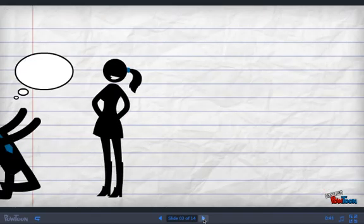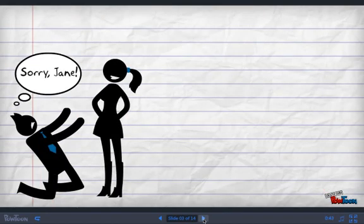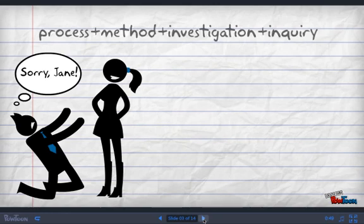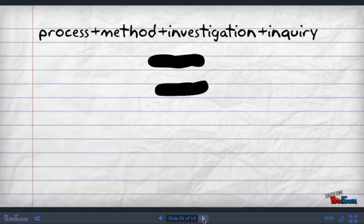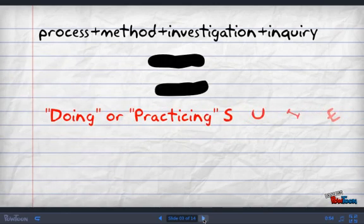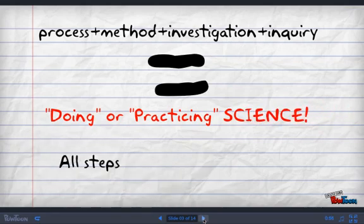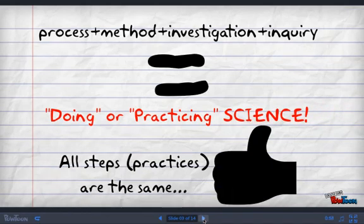Pretty plain Jane, no offense to Jane of course, but a scientific investigation, method, inquiry, and or just doing science is way, way more complicated and interesting than that. Today we like to say that the phrases of scientific process, scientific method, scientific investigation, scientific inquiry, are all just ways to say one common thing: how someone is doing or practicing science. And they all follow the same basic steps.